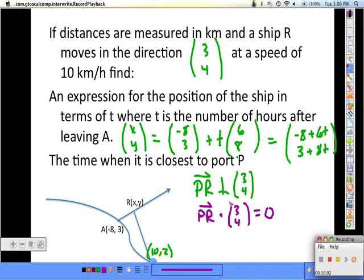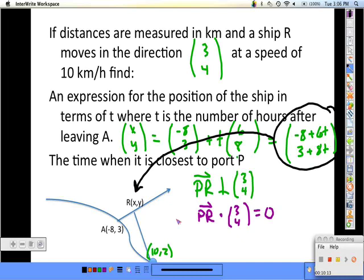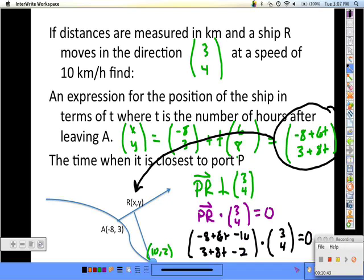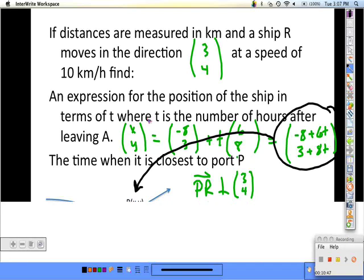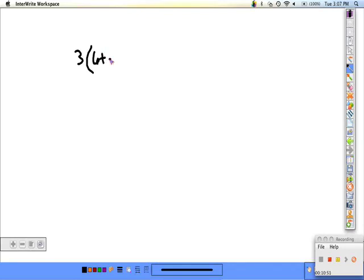The reason this helps me is I have an expression that I can use for PR in vector form. We came up with this parametric form for any (x, y) ordered pair, which is what R is. So PR will be point R minus point P: (-8 plus 6t minus 10, 3 plus 8t minus 2). The dot product of that with (3, 4) must equal 0, and so when we find the dot product we end up getting 3 times (6t minus 18) plus 4 times (1 plus 8t) equals 0.